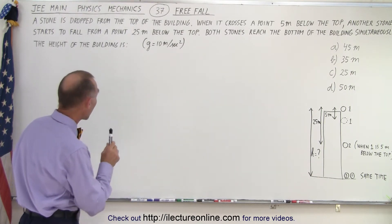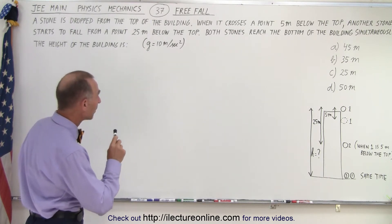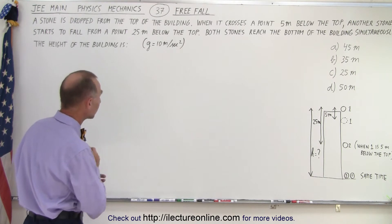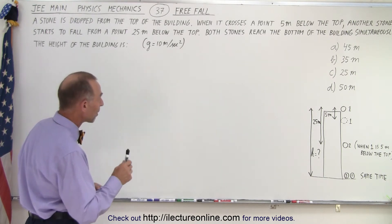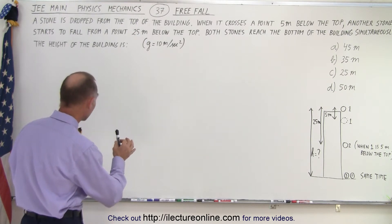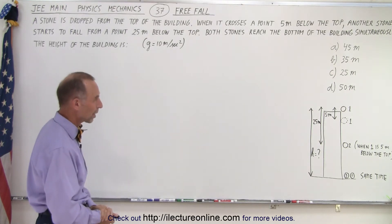So let's read it and see what it entails. A stone is dropped from the top of the building. When it crosses a point 5 meters below the top, another stone starts to fall from a point 25 meters below the top. Both stones reach the bottom of the building simultaneously. The height of the building is, and they make it a little bit easier by letting us take g equals to 10 meters per second squared.